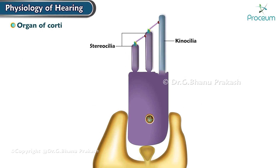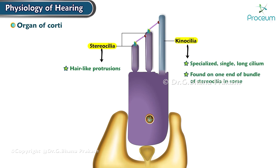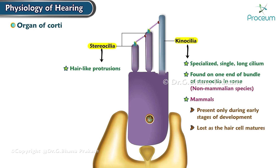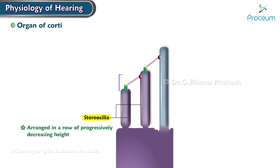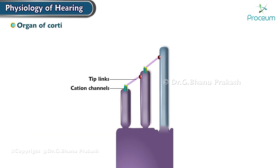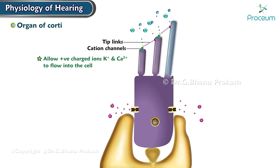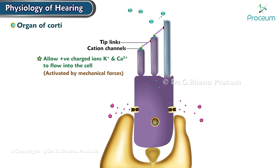Stereocilia and Kinocilia. Hair cells are named for their hair-like protrusions called stereocilia. Kinocilia, on the other hand, are specialized, single, long cilia found on one end of the bundle of stereocilia in some non-mammalian species. In mammals, kinocilia are only present during early stages of development and are later lost as the hair cell matures. Stereocilia are arranged in rows of progressively decreasing height, with the tallest stereocilium at one end and the shortest at the other. They are connected by fine, elastic structures called tip links, which contain mechanically sensitive cation channels that allow positively charged ions such as potassium and calcium to flow into the cell when activated by mechanical forces.